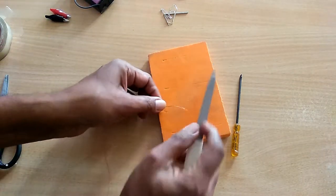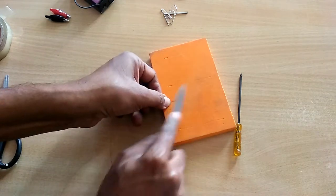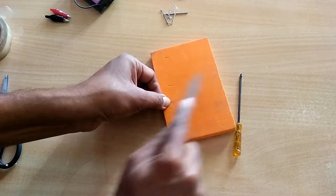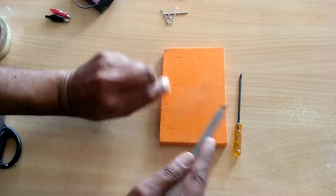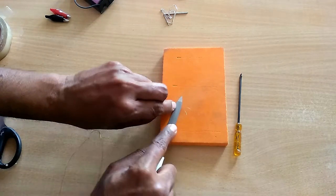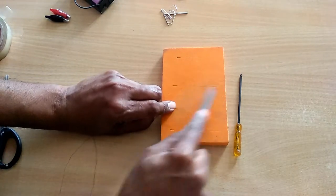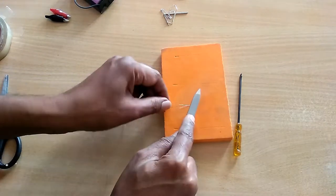You need to use a file or a sandpaper and rub it thoroughly to remove the enamel coating from the copper wire. Otherwise the connection to the battery will not be completed.